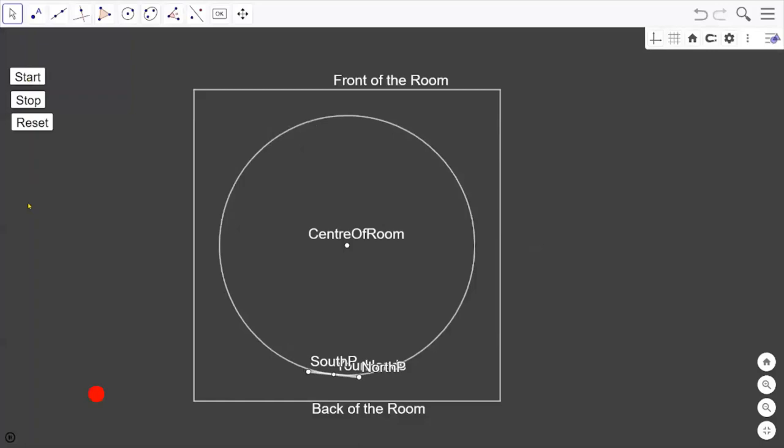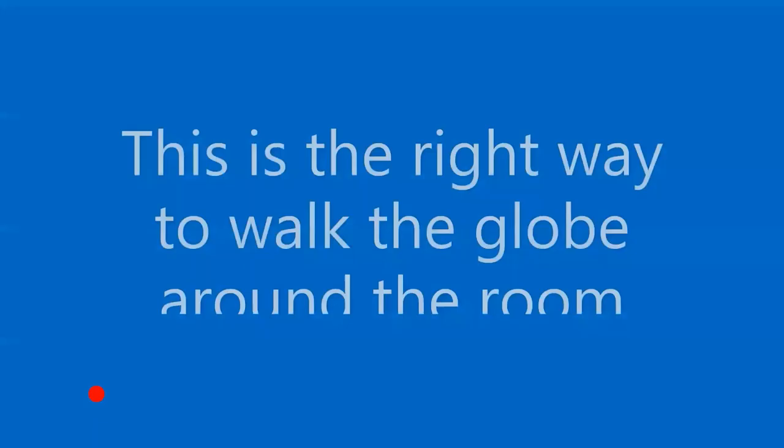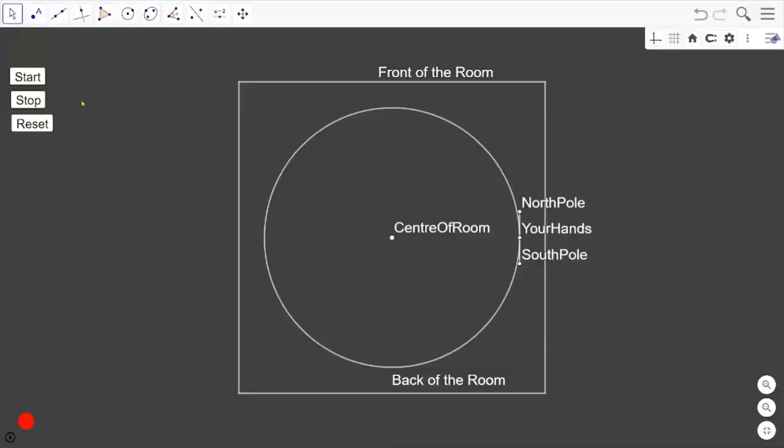So if you walk around the room with the South Pole next to your body and the North Pole facing away from you, you'll end up in a constant state of equinox.